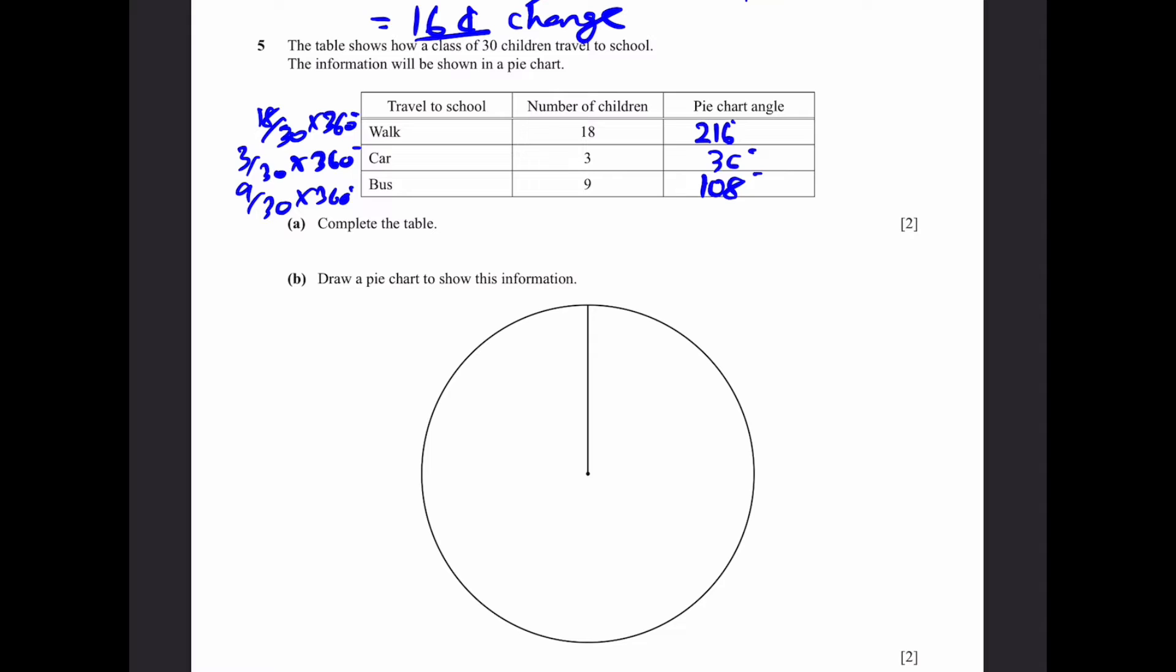Part B: Draw a pie chart to show this information. I don't have an actual protractor with me but I will show you how to do it. You measure, for example, 36 degrees using a protractor. This will be the sector for car travel. Now for bus from this line here we measure 108 degrees and draw a line corresponding to that angle. The third sector, the remaining one, is going to be 216 degrees automatically and that is the sector for walk. Just make sure you measure using a protractor accurately.